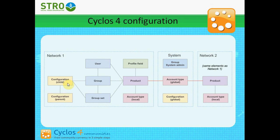In the configuration you can set everything that the user can only have one of. For example, the user can only have one default country, and the user can only have one layout. So all those kinds of things can be configured in the configuration. The configurations on the other hand can be extended, so you can have a child and a parent configuration, and the child configuration inherits values of the parent configuration.